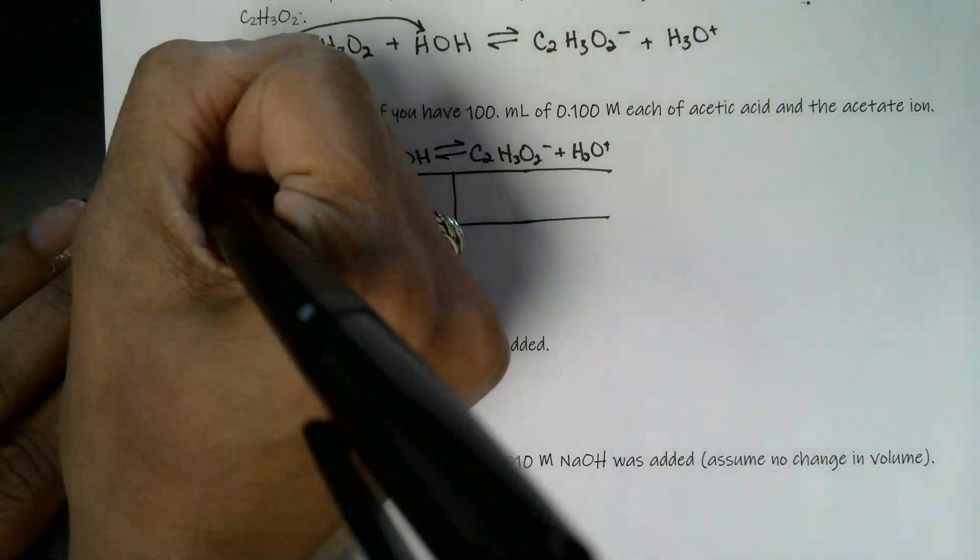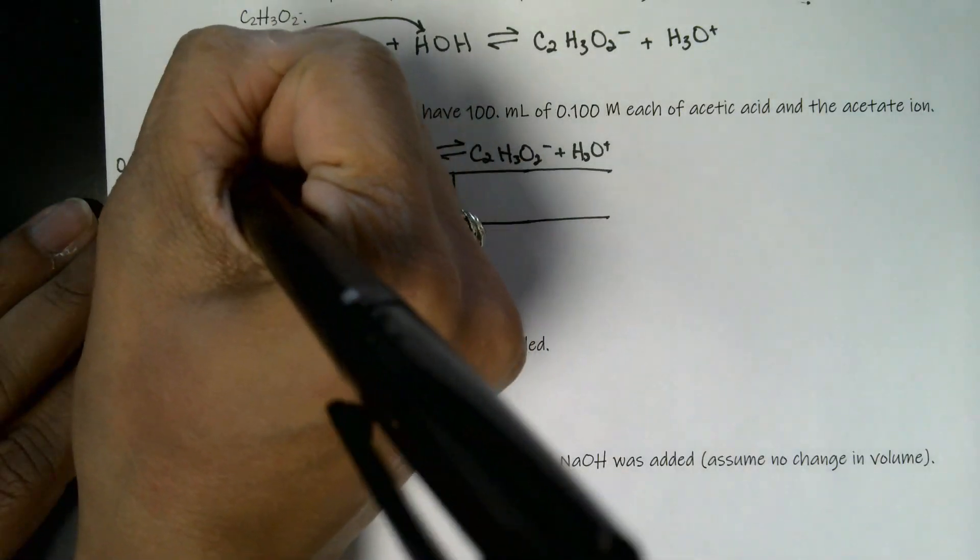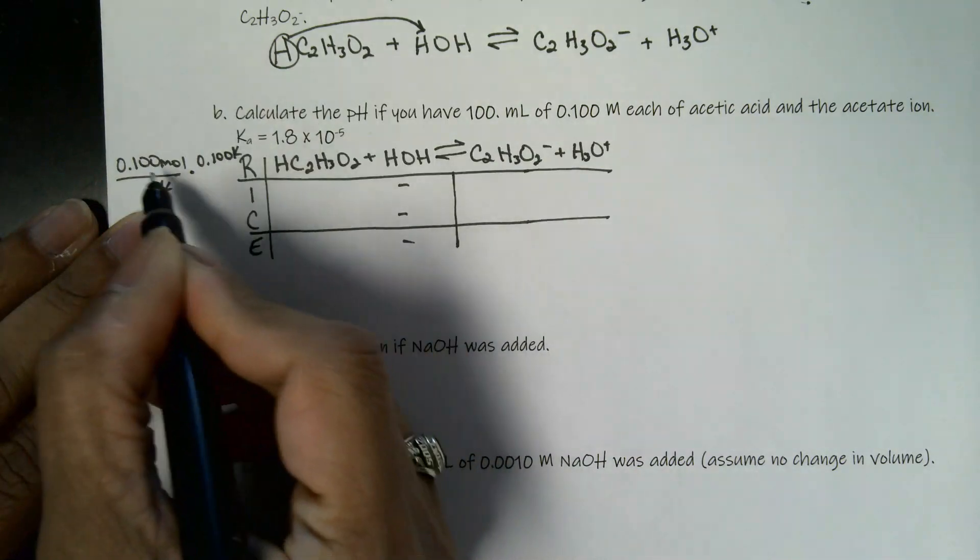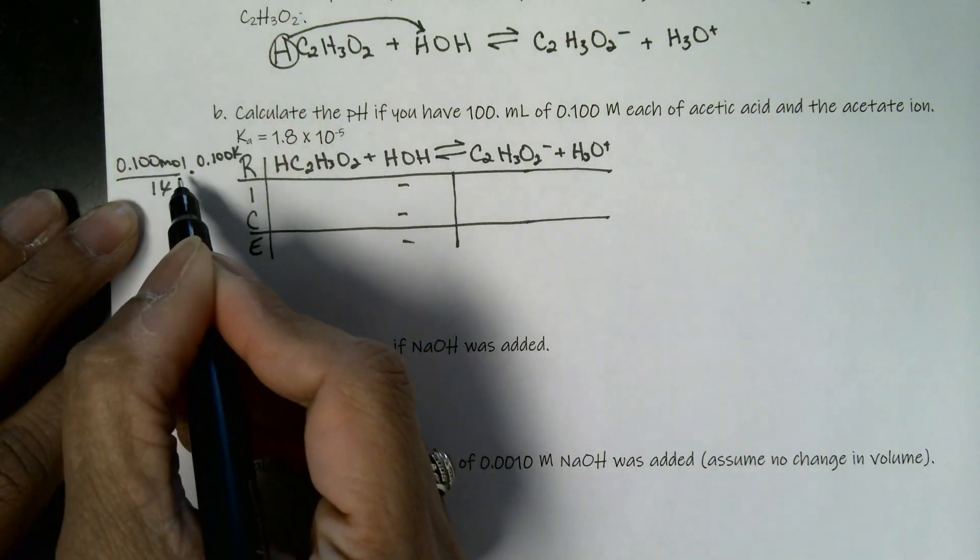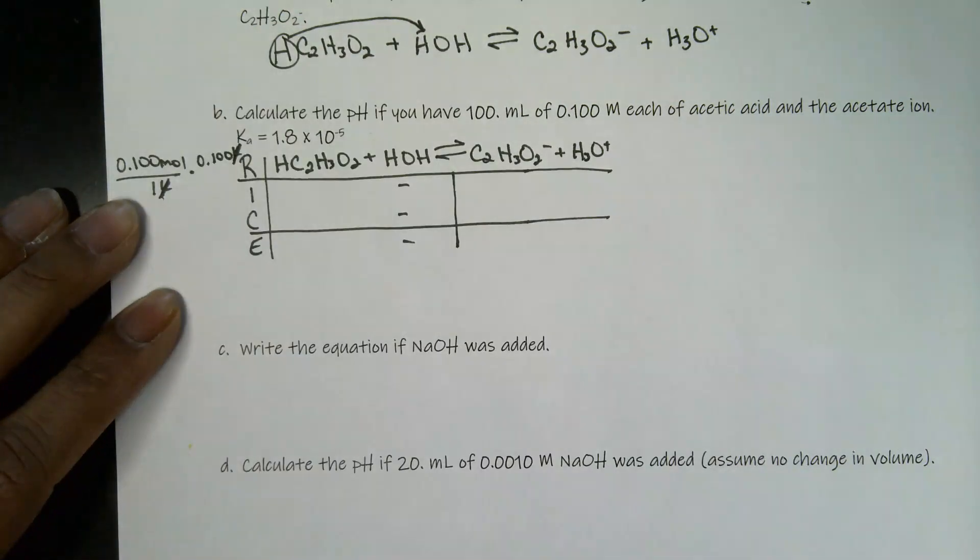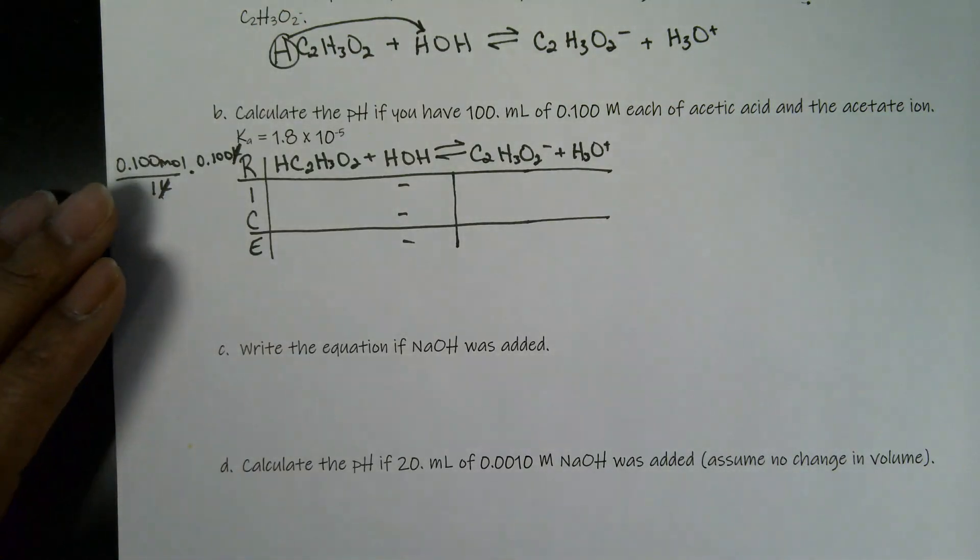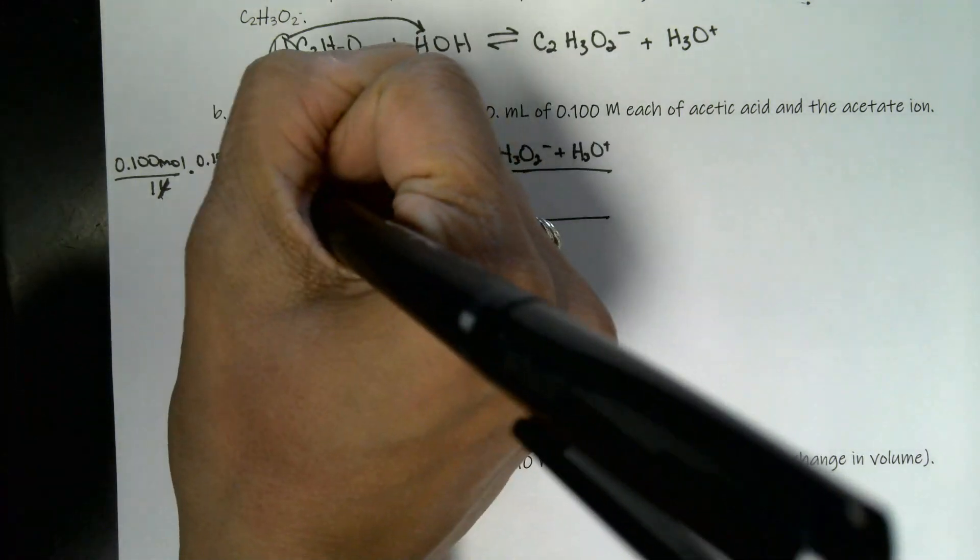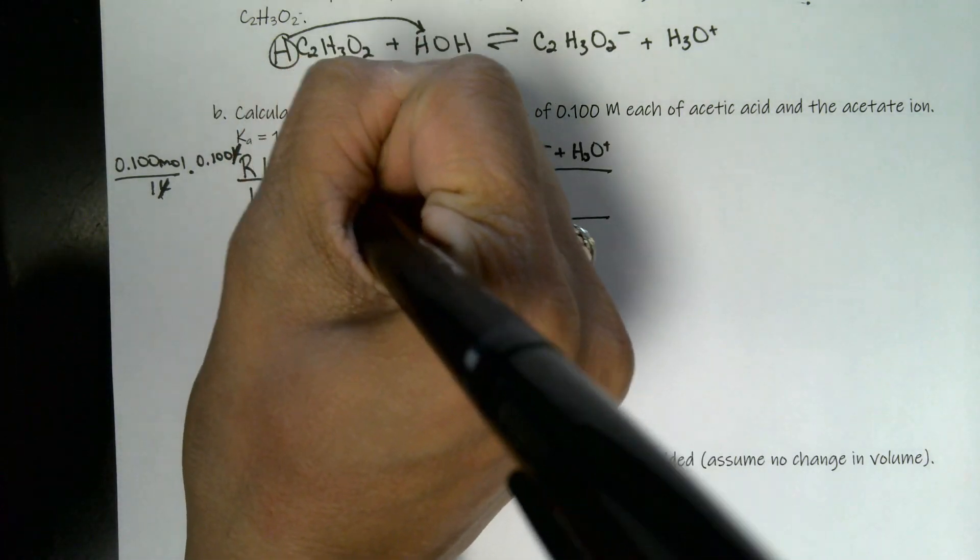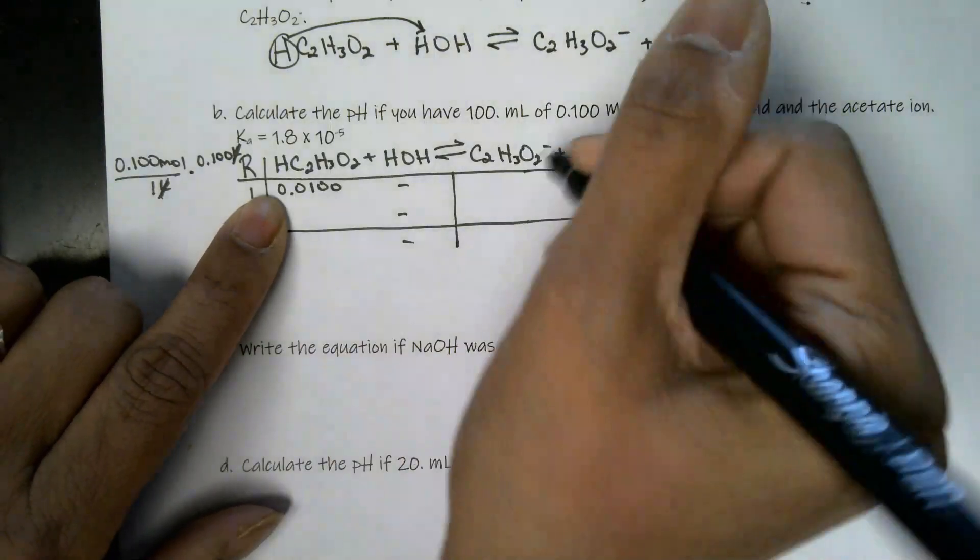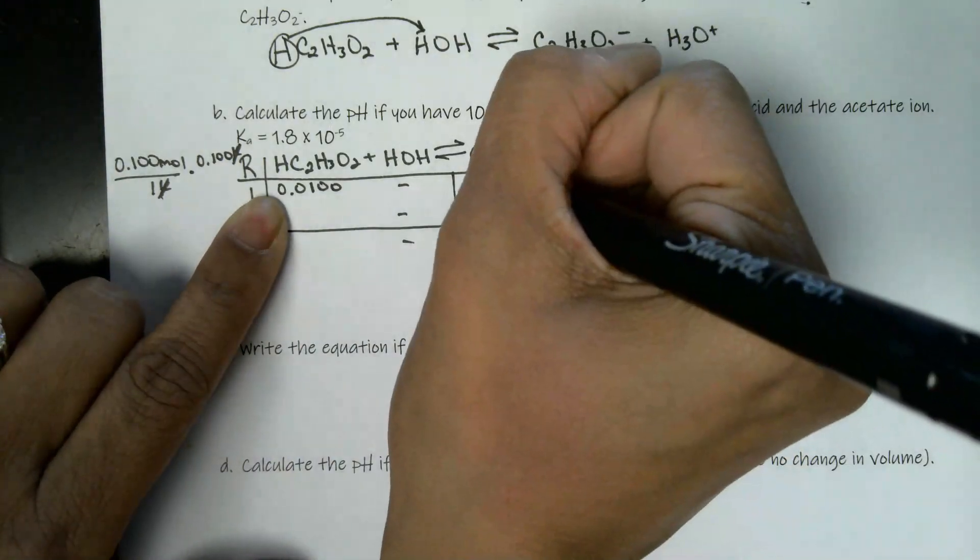So here we have 100 milliliters of 0.100 molar. Remember, in the rice table, there's only moles and pressure. Since this is a solution, we're dealing with moles. So we have 0.100 liters times 0.1 molarity. And just to remind you, molarity is moles per liter. So 0.100 moles for every one liter. So I have to convert this over to liters and do 0.100 liters. Those two liters cancel. And that's where I get the moles at the end. So when I multiply the two, we get 0.0100. We have this for our acid. Plus we have that same moles for our conjugate base.